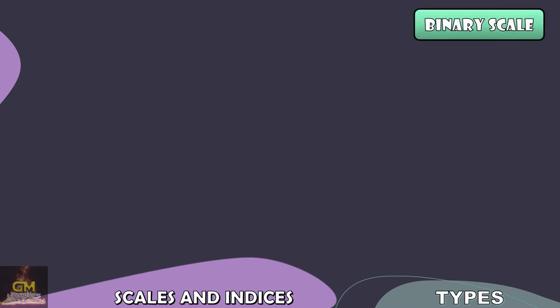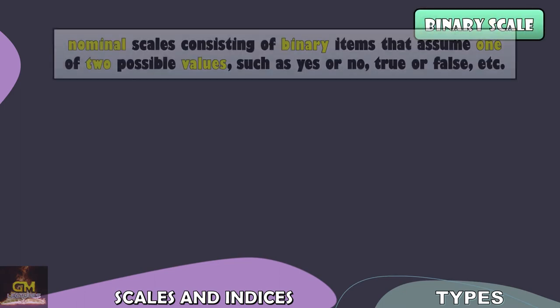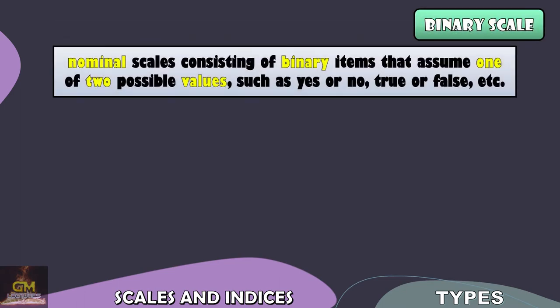First, we have the binary scale. A binary scale would be nominal scales consisting of binary items that assume one of two possible values, such as yes or no, true or false, etc. From the word itself — binary scale — there would only be two possible options.